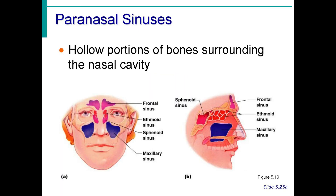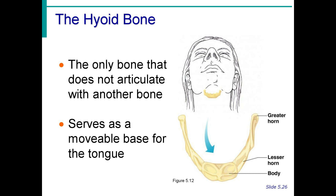The most commonly discussed sinus is the paranasal sinus — these are the hollow portions of bones surrounding the nasal cavity. This is where the term sinusitis comes from, referring to inflammation of the paranasal sinuses. The hyoid bone is not really part of the vertebral column, but in the laboratory book it is considered a related structure. It is a U-shaped bone in the throat that serves as an attachment for tongue muscles and connective tissue associated with the larynx or voice box.